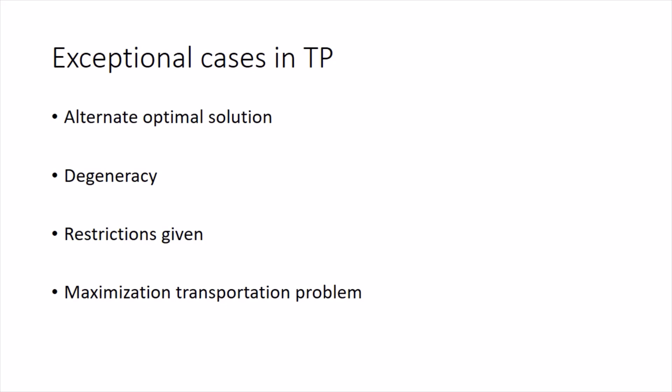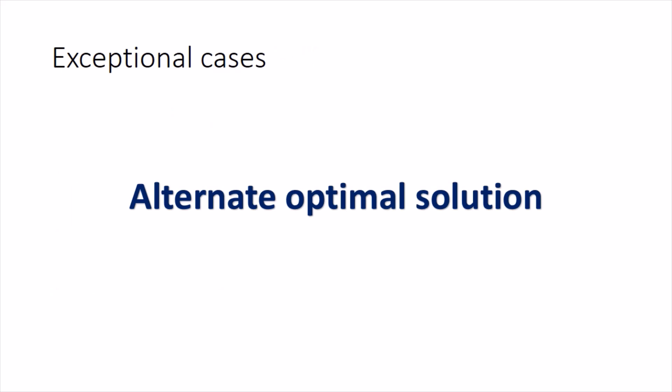The exceptional cases we will be focusing on are: we can have an alternate optimal solution, we can have degeneracy in the system, there can be certain restrictions given, and the transportation problem can be of maximization type — usually it is minimization type but sometimes it can also be maximization. In this video we are going to take up the first two cases.